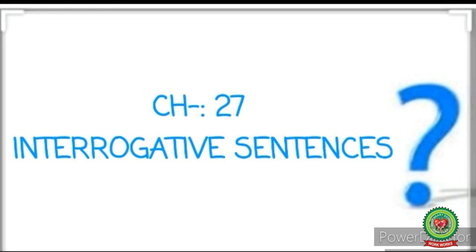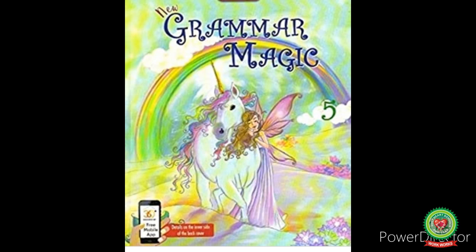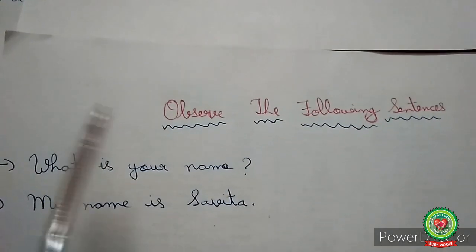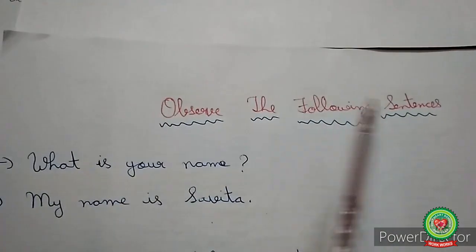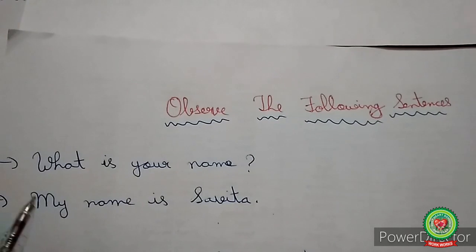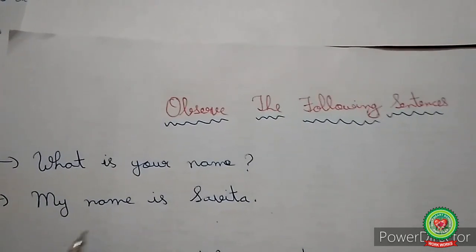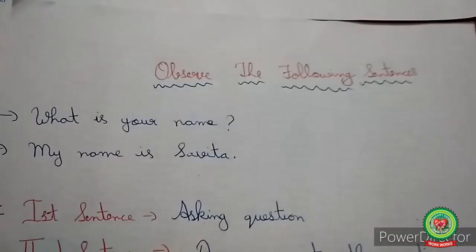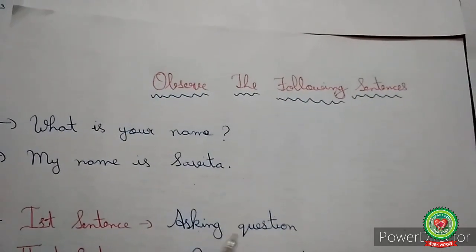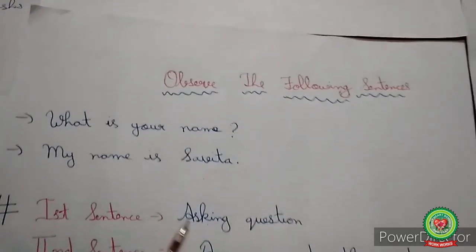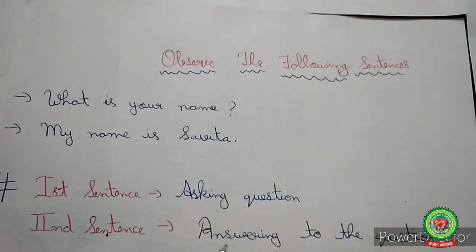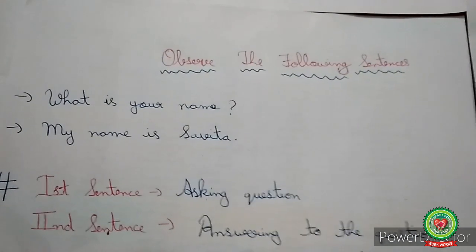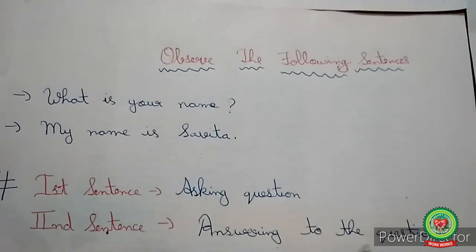Good morning students, today we are going to start with the chapter interrogative sentences. Open your book New Grammar Magic at page hundred. Observe the following sentences: 'What is your name?' and 'My name is Savita.' Do you find any difference between these two sentences? In the first sentence, one person is asking a question — what is her name — and in the second sentence the other person is answering that her name is Savita, so it is an assertive sentence.